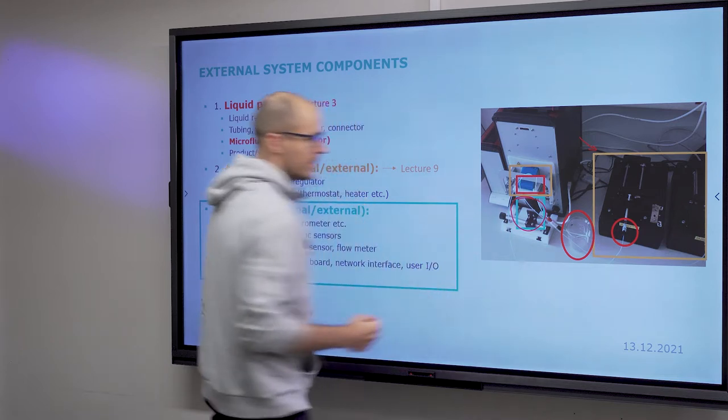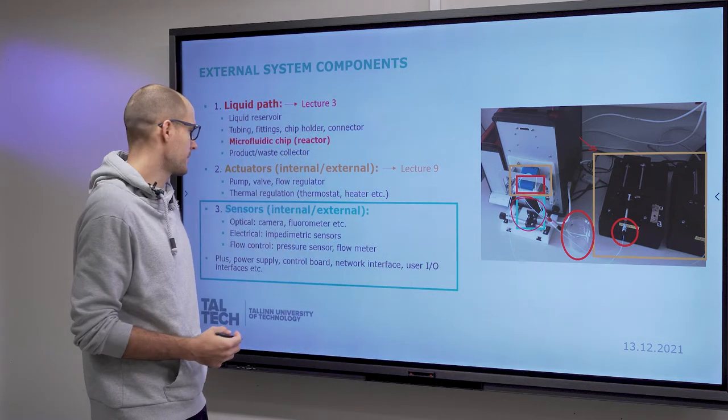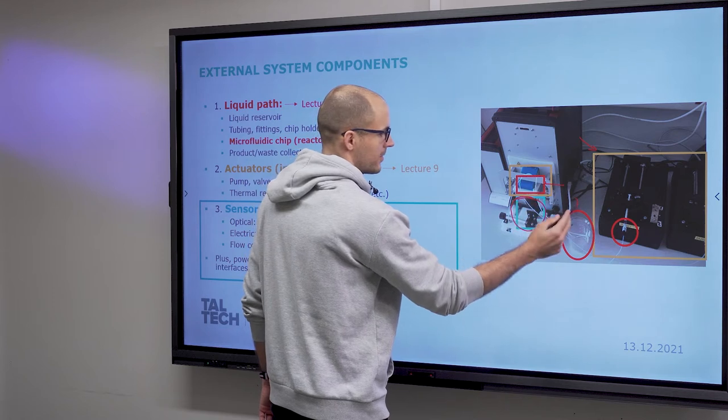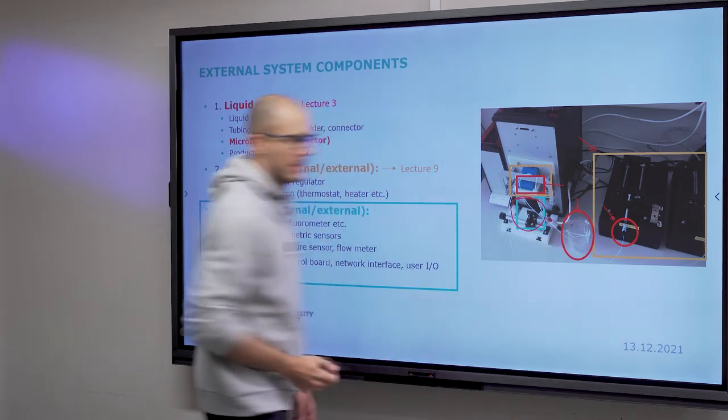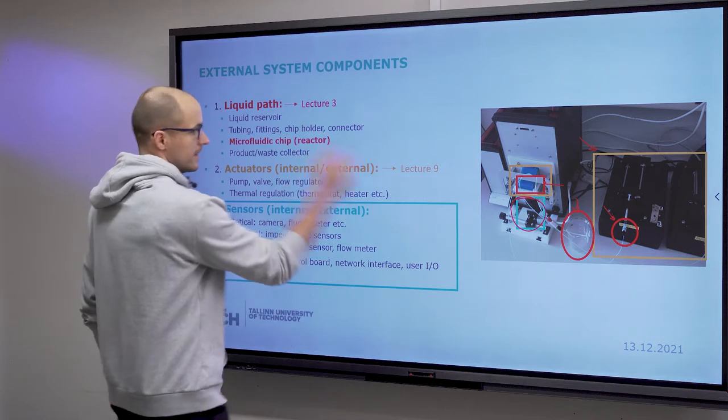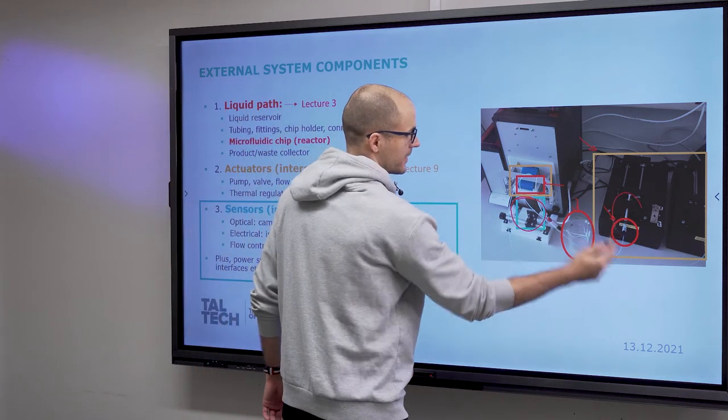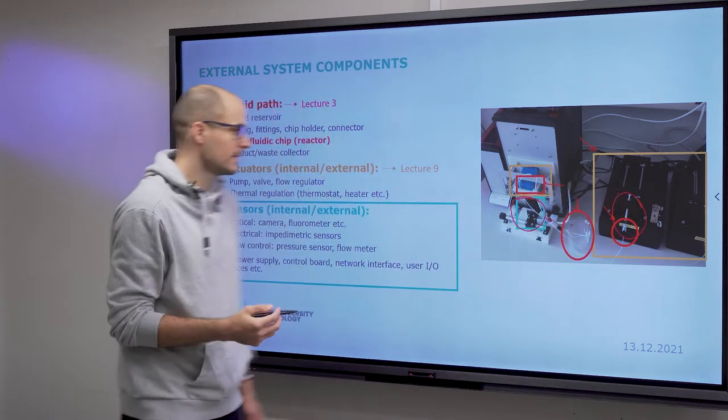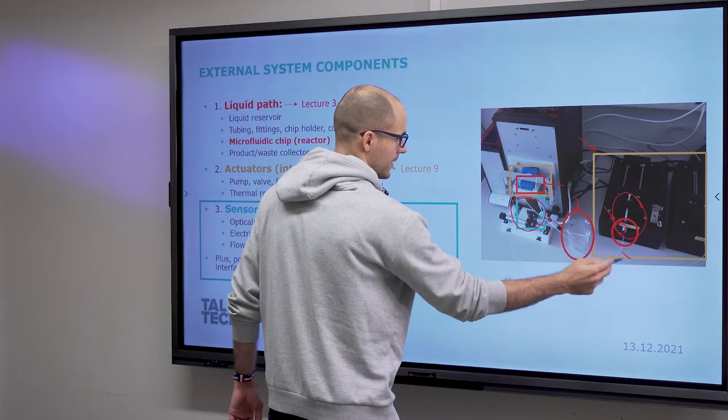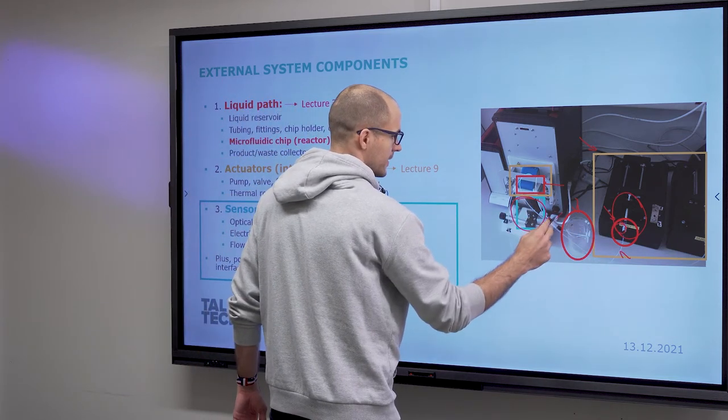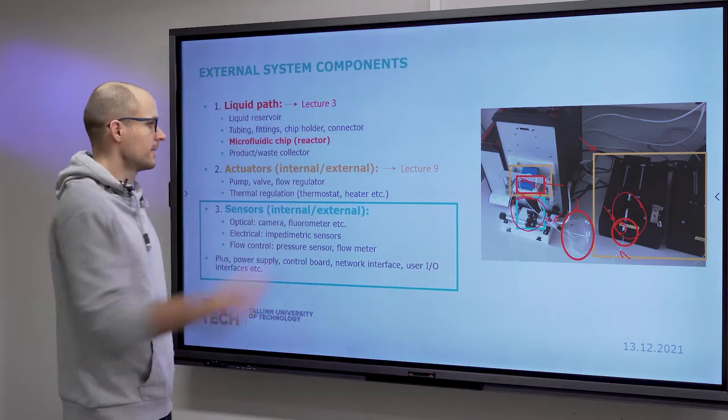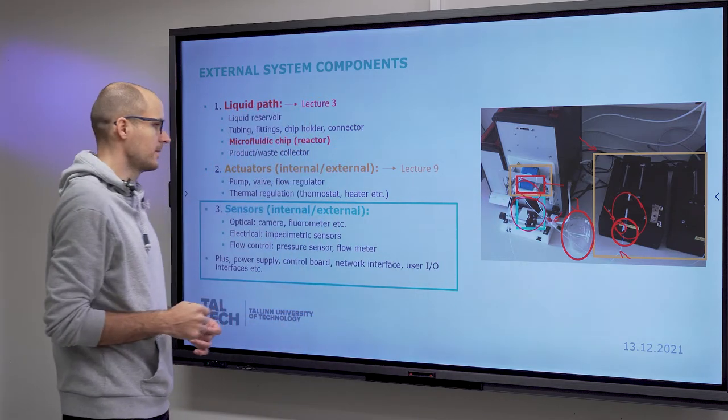A camera, which now falls under the category of sensors, and the liquid path, which takes care of the liquid handling. This consists of the liquid reservoir—in this case a syringe—various fittings, tubing, connectors, and the chip itself loaded into the chip holder of this thermostat unit.